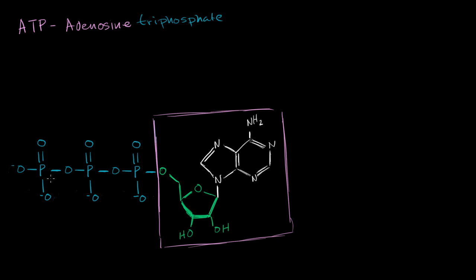And then you have three phosphoryl groups. When they break off, they can turn into a phosphate. So the triphosphate part, you have one phosphoryl group, two phosphoryl groups, and three phosphoryl groups.